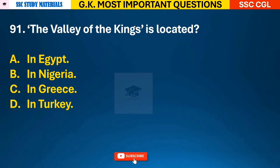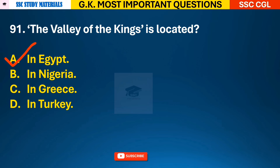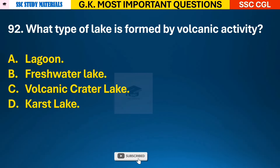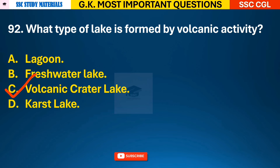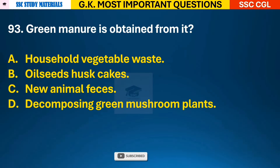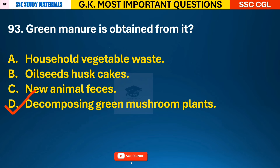Question 91: The Valley of the Kings is located? Answer A - it is located in Egypt. Question 92: What type of lake is formed by volcanic activity? Answer C - volcanic crater lake. Question 93: Green manure is obtained from? Answer D - decomposing green mushroom plants.